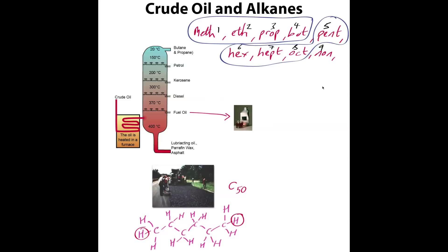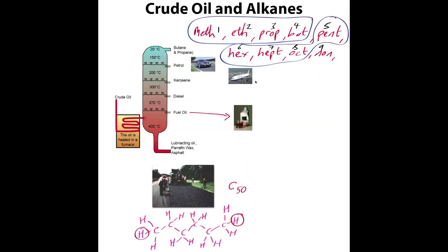Kerosene is more like aviation fuel — the stuff used for aeroplanes. As the molecular weight gets longer — meaning more carbons — we get down into the diesel range. Trucks run on diesel, and some cars run on diesel oil too. Then we're getting into fuel oils, which are getting harder to burn but can still combust under different conditions.